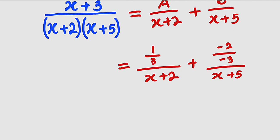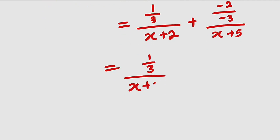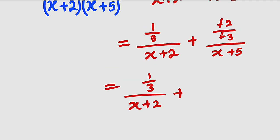Once you simplify this, you're going to obtain 1/3 divided by x+2. Then plus negative, negative will cancel, right? So we have 2/3 divided by x+5.